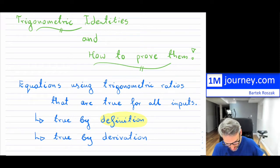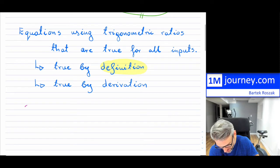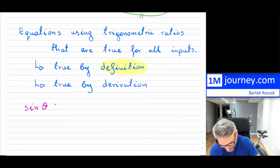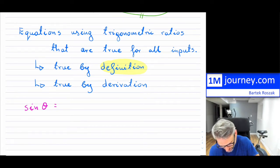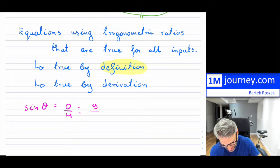You certainly should recall all the definitions. For instance, sine of theta — you know that this is just the definition of opposite over hypotenuse in terms of the lengths. I'm going to start writing this as y divided by the hypotenuse, which is going to be the radius r.